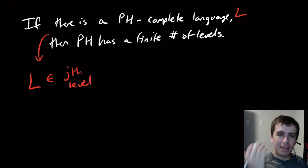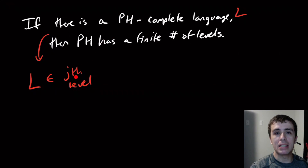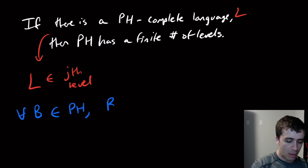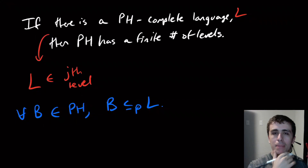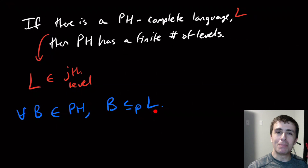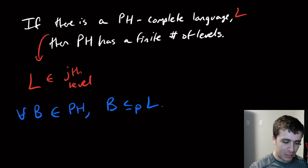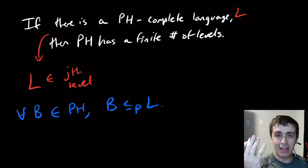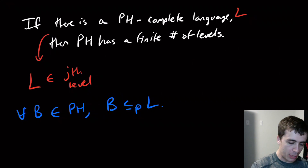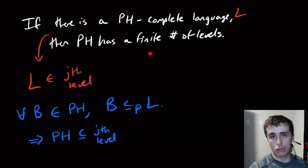Let's say this PH-complete language L lives in the j-th level. Since it's PH-complete, every language B in the polynomial hierarchy poly-time reduces to L. That means every single language in PH can effectively be solved in j-th level time — because that's what L does — so PH is a subset of the j-th level.